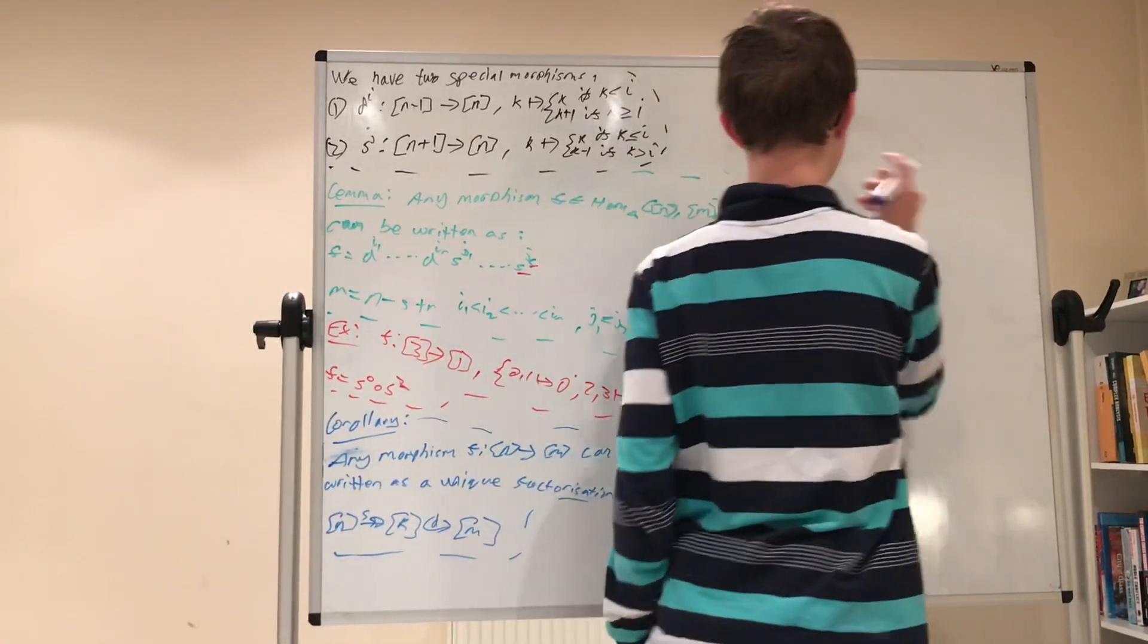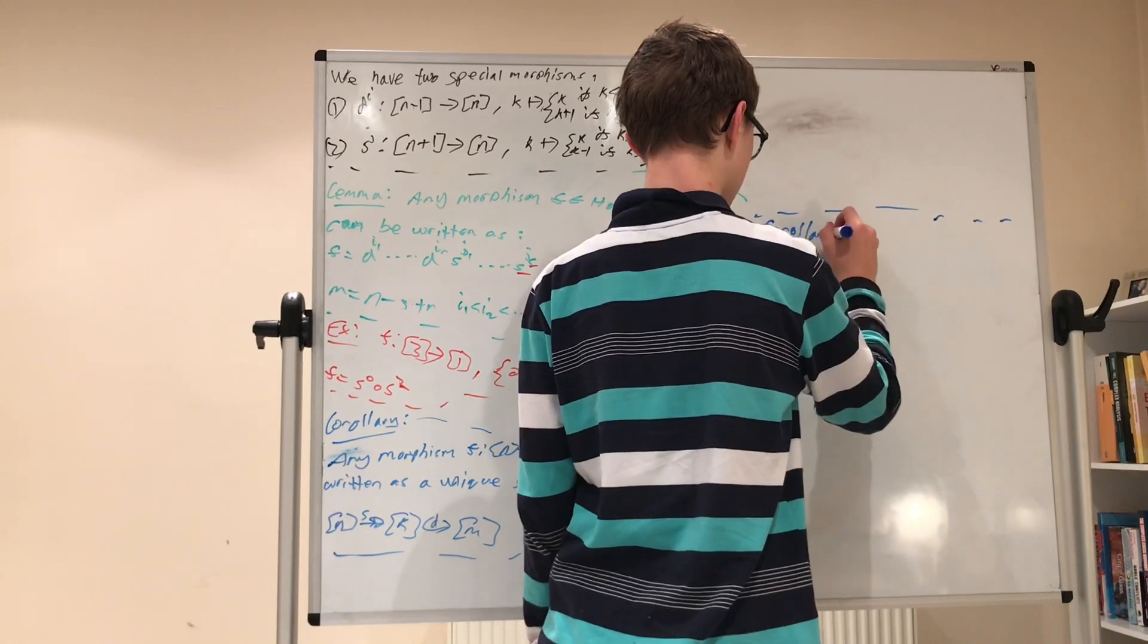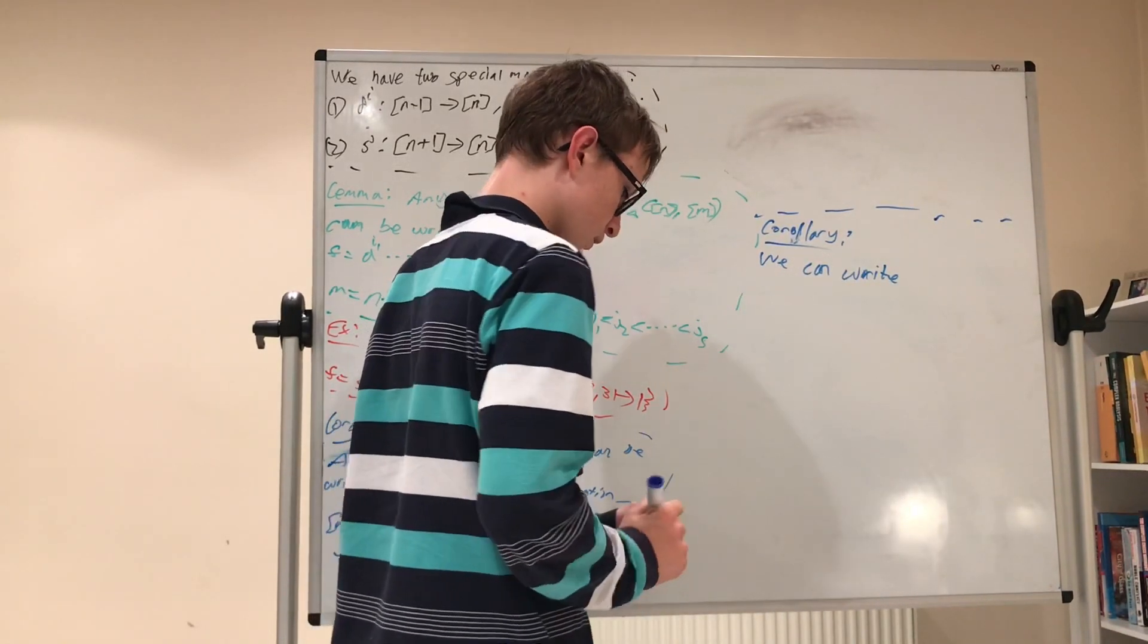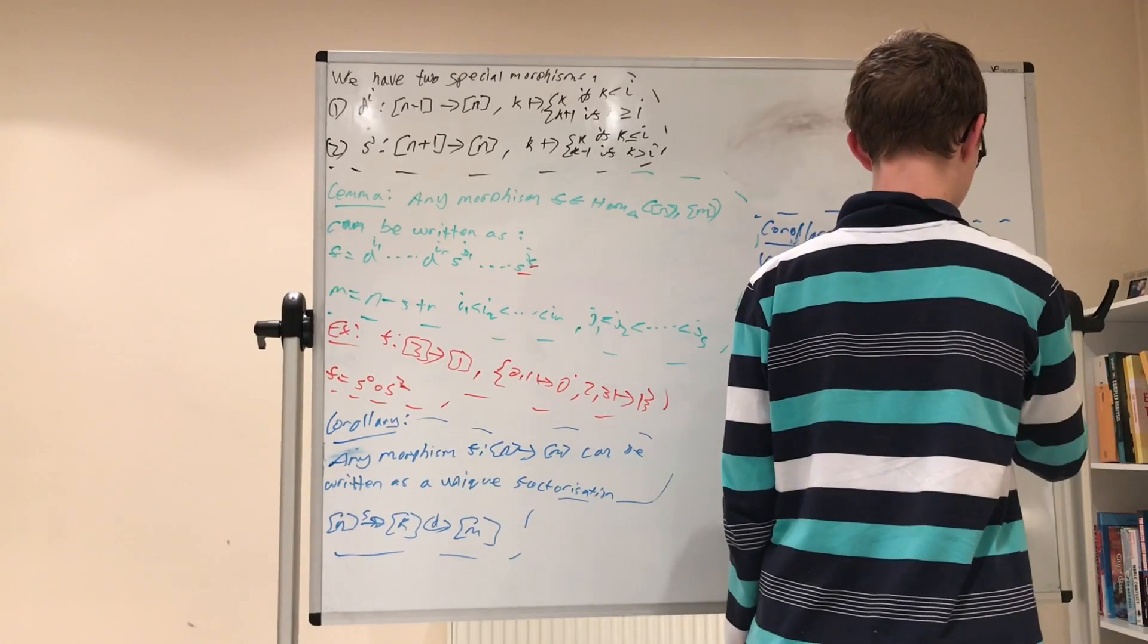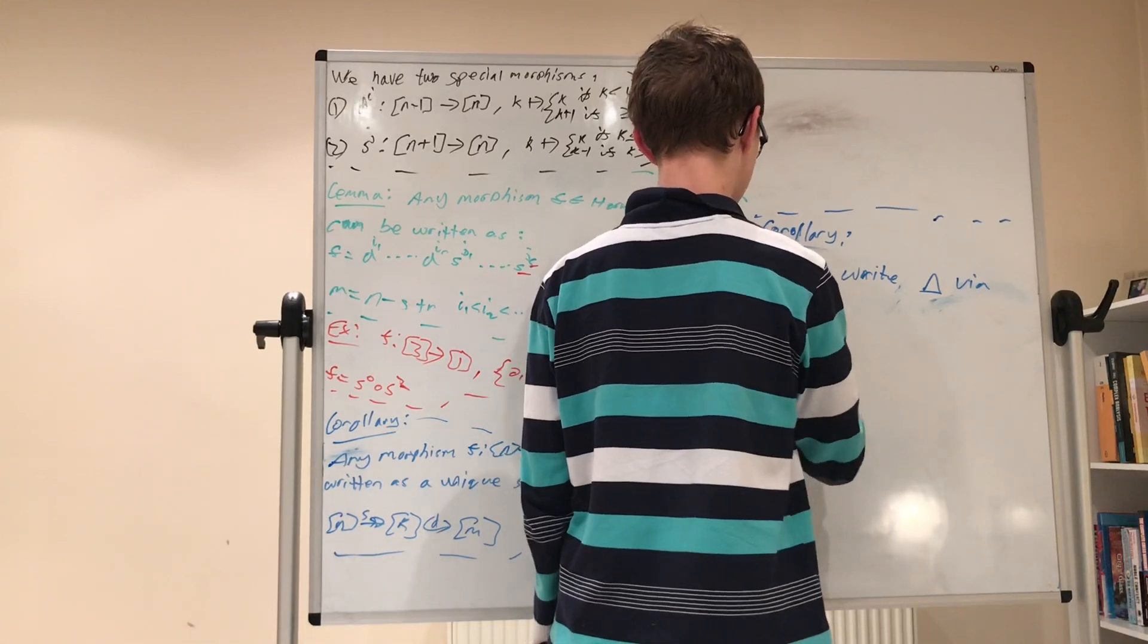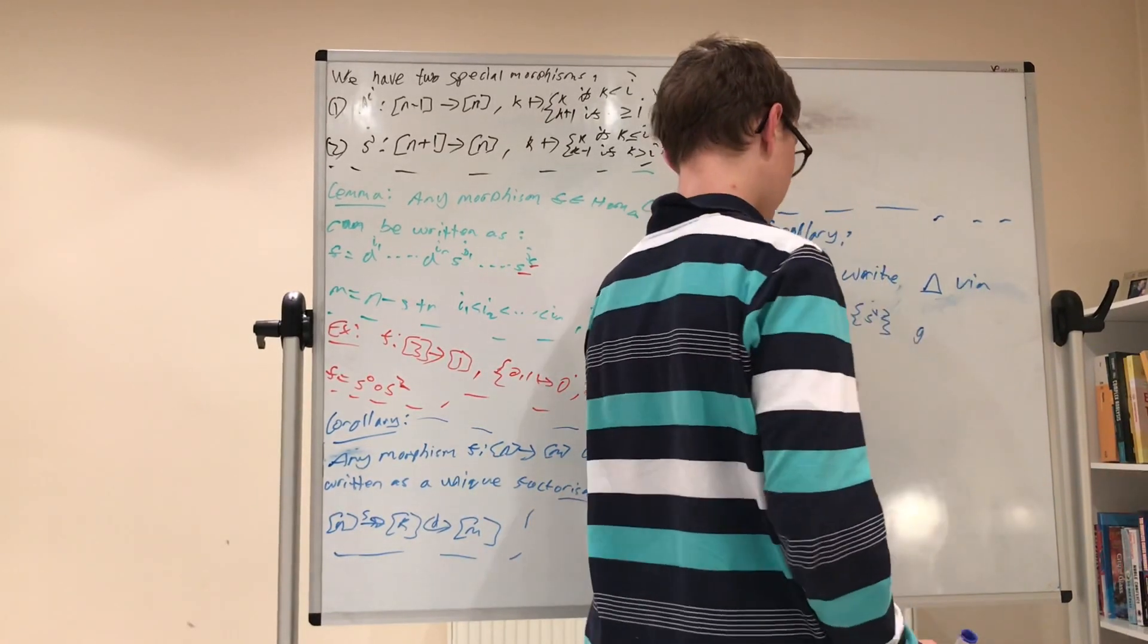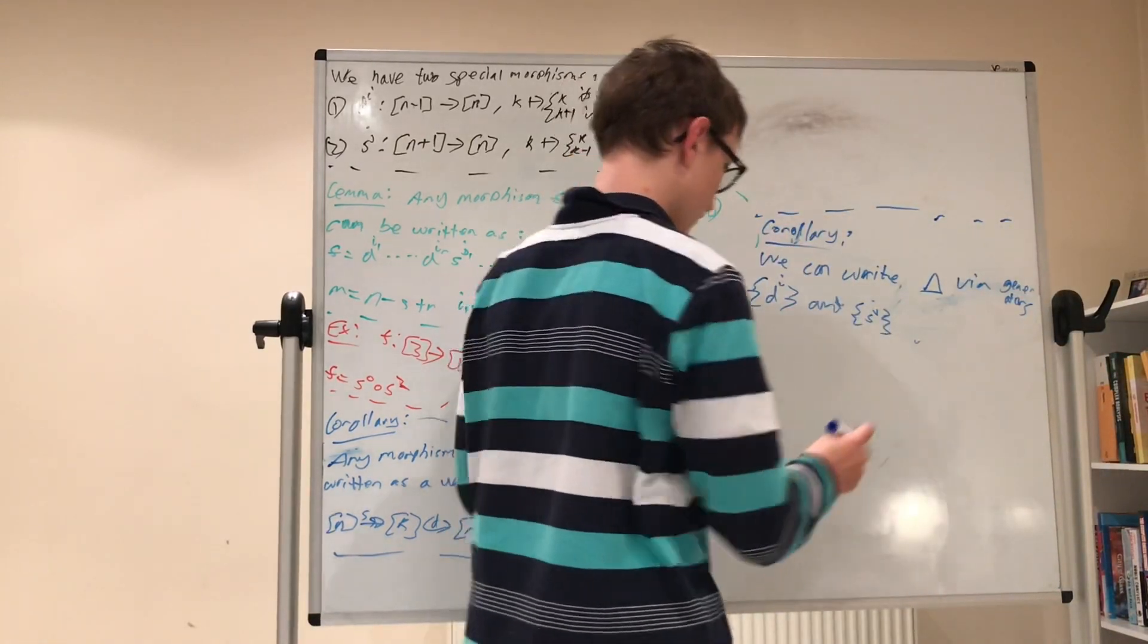And what is this unique factorization? Well, it takes n, and it takes it surjectively via s to k, and then it takes that injectively via d to m. Alright, so this is the first corollary we get. The second one we get, I'm just going to avoid this patch, I'll clean it up later. The second corollary we get is that we can write the simplicial category as via these morphisms di and sj, via generators, I'll call them generators, with the relations.